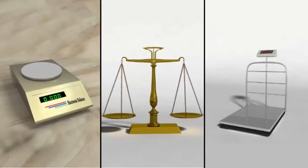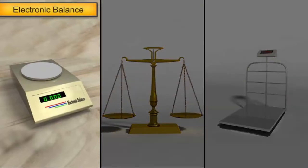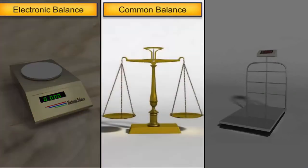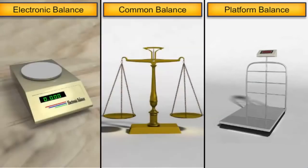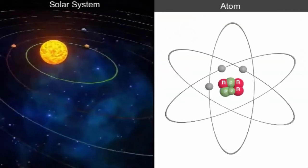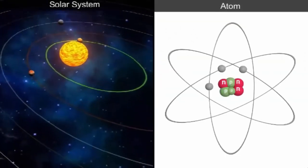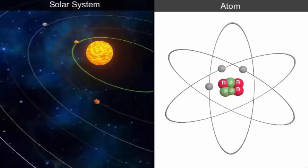Different types of balances are used to measure masses of objects of varying magnitudes. They range from electronic balances used in gold shops, common balances used in grocery shops, and platform balances used to weigh heavy articles such as reams of construction rods. However, some objects are either so large or so small that their mass cannot be measured using balances.